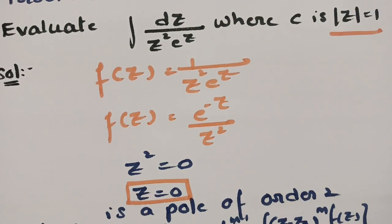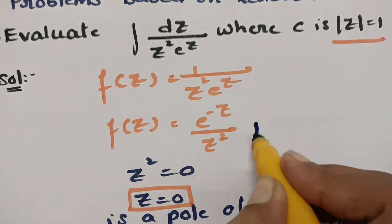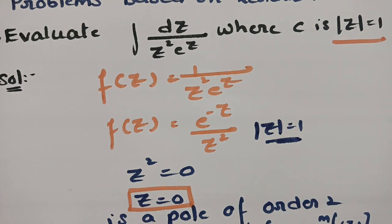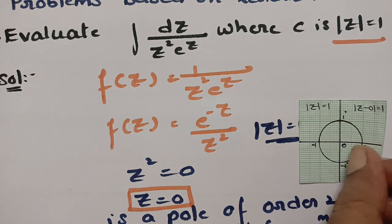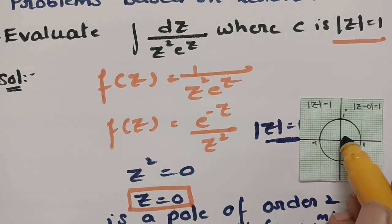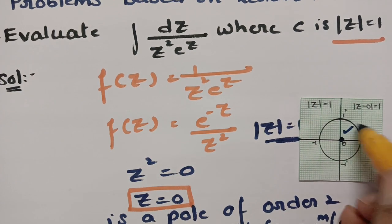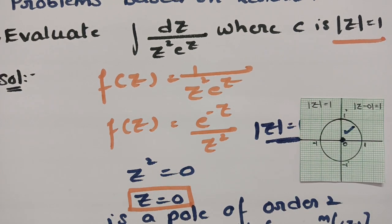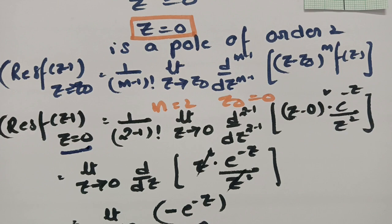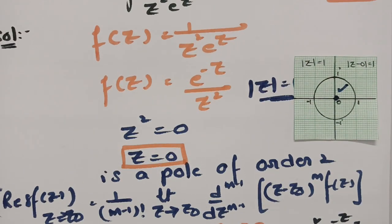Note that |z| = 1 defines a circle with center 0 and radius 1, so z = 0 lies within the contour. Therefore we include its residue in our calculation. Thank you so much for watching and staying till the end. If you really liked this video, please pass it on to your friends.